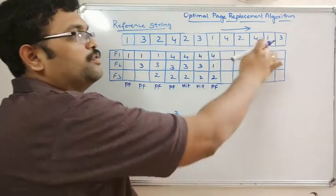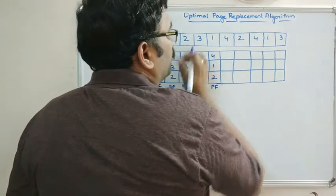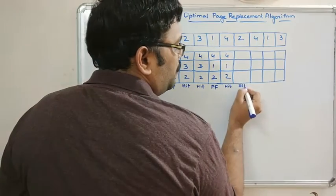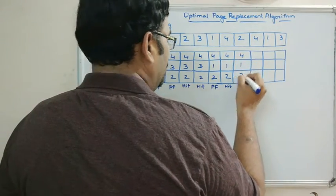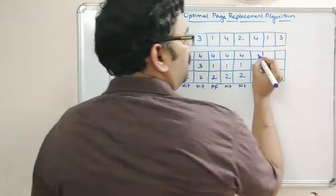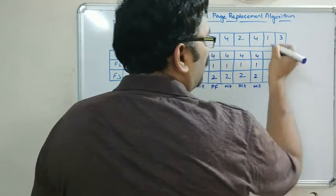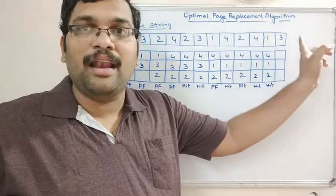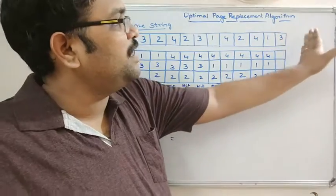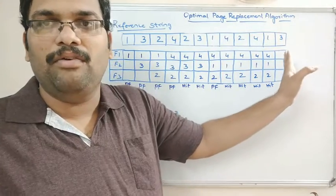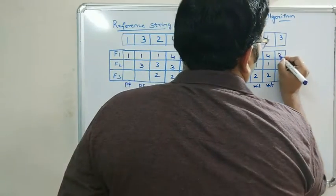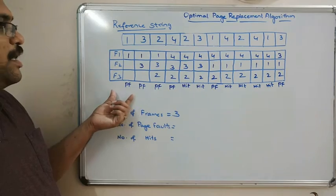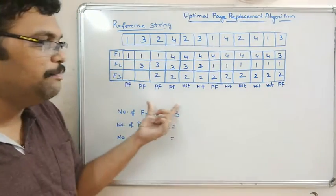Next, page 4 is already available — hit, no change. Page 2 is also available — hit. Page 4 again is available — hit. Page 1 is already there — hit. Finally, page 3 is not in memory, and since it's the last page in the reference string, we can replace any page — I'll replace page 4 with page 3.